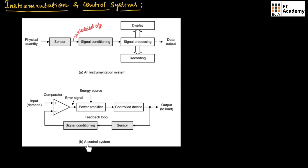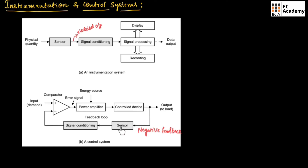Figure B shows a control system. This control system uses negative feedback. The advantage of negative feedback is that it will stabilize the output, so the system will be more stable. This control system consists of a comparator, power amplifier, and control devices. In the feedback stage, it consists of a sensor and signal conditioning.